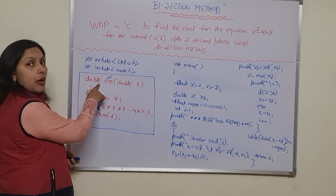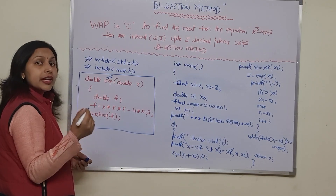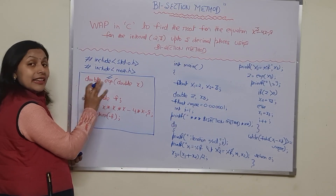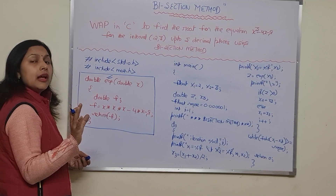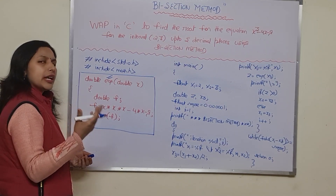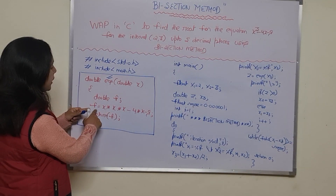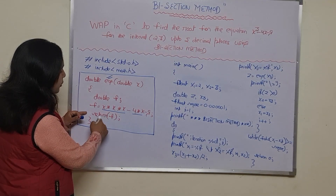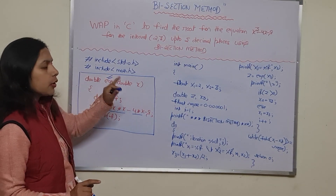I am declaring the function as double because the values we get from this function will be floating-point decimal values. You could take it as float as well, but since we may get many decimal places, double is preferred. The equation x cubed minus 4x minus 9 is defined inside, and we just return the value as 'return f'.